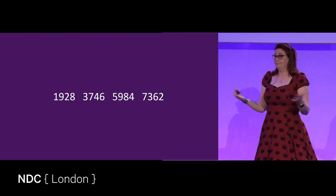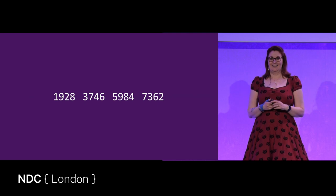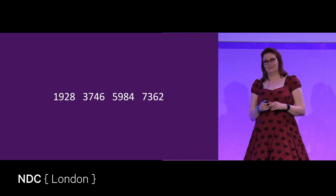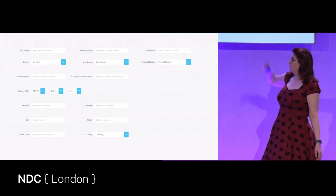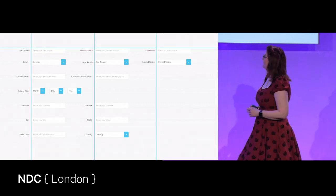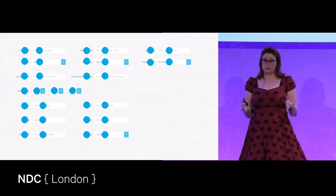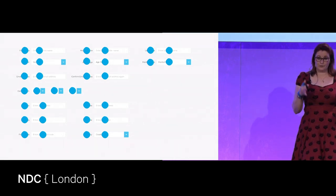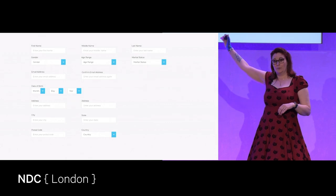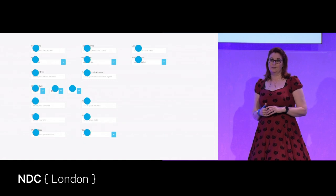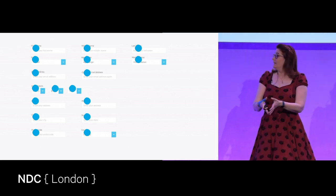The same is true for our applications and software. Let's take a more practical example and start with something we all come in contact with — forms. Here we have a form with 32 visual fixations: 32 places where users need to stop, focus, read, and move on. By simply moving our labels on top of our input boxes, we reduce the number of visual fixations by almost half — down to 18 — because now they're grouped and make sense together.